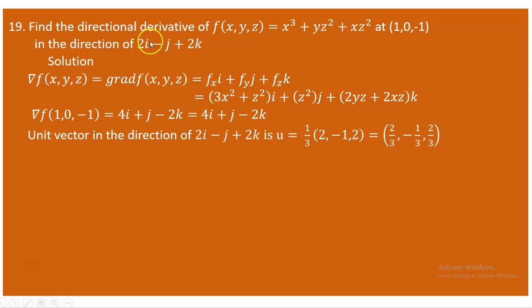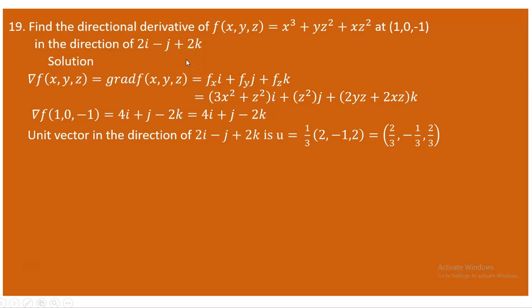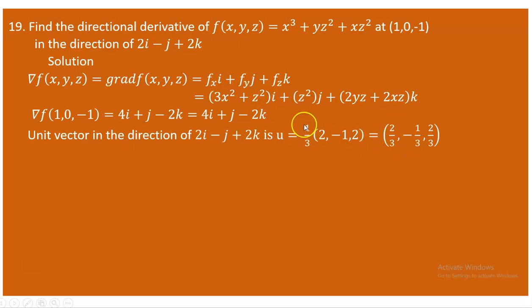The magnitude is obtained by taking the square root of the sum of squares of the components: 2² = 4, (-1)² = 1, and 2² = 4. So 4 + 1 + 4 = 9, and √9 = 3. Dividing by the magnitude of 3 gives the unit vector as (2/3)i - (1/3)j + (2/3)k. This is the unit vector for the given vector.